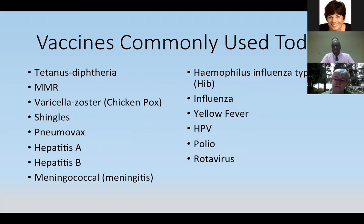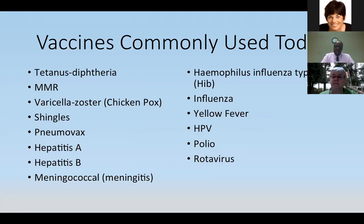Here is a listing of vaccines I'm sure you've heard of that we use today. Some of these include tetanus, measles, mumps, rubella, chickenpox, as well as the shingles vaccine, pneumonia vaccine or pneumovax, hepatitis A, hepatitis B vaccines, meningococcal or meningitis vaccines, haemophilus influenzae type B commonly used in pediatric populations, influenza, and others we don't use as often like yellow fever, human papillomavirus which causes genital and skin warts, polio, and rotavirus which is more of a pediatric vaccine.